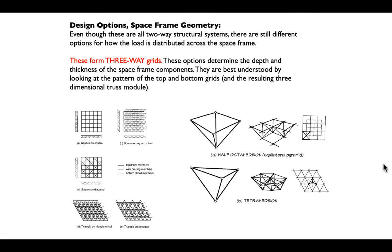The geometry of a space frame, just like a truss, relies on always being triangulated. We're mostly interested in triangulating it in section, but it can also be mathematically more efficient to triangulate it in plan. It's easier to resist horizontal lateral loads or racking if we've triangulated it in plan. But so long as we have triangulation in section, most of the job of the space frame gets done.